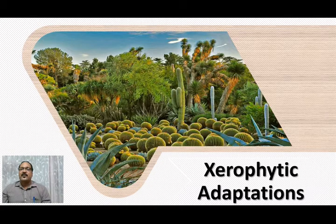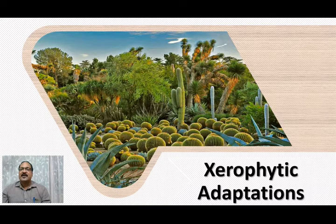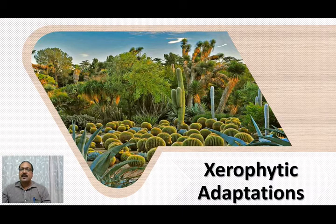The third xeric habitat is the habitat that is dry both physically as well as physiologically. Examples of such habitats are slopey areas, for example, the slopes of a mountain.